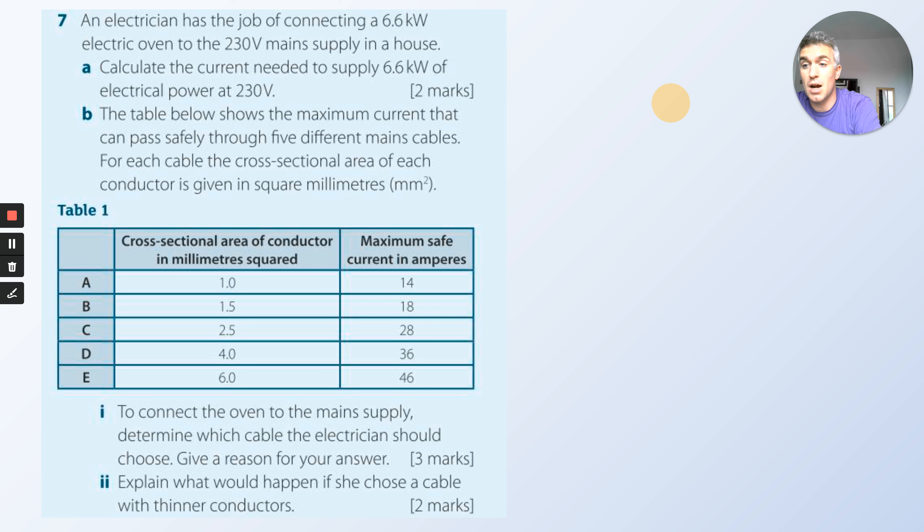An electrician has the job of connecting a 6.6 kilowatt electric oven to the 230 volt mains supply in a house. Calculate the current needed to supply 6.6 kilowatts of electrical power at 230 volts. Remember, convert kilowatts to watts. The table below shows the maximum current that can pass through five different mains cables, for each cable the cross-sectional area is given in square millimeters. To connect the oven to the mains supply, determine which cable the electrician should choose. Give a reason for your answer. So basically, work out what you need, check the table, that gives you the answer.